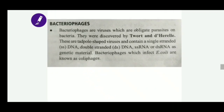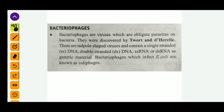Bacteriophages are viruses that only infect bacteria — they are obligate parasites on bacteria. Bacteriophage was first discovered by Twort and d'Hérelle. Their structure is tadpole-like. Their genetic material could be RNA or DNA — it could be linear single-stranded DNA, double-stranded circular DNA, or single-stranded linear RNA.